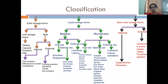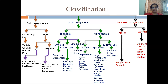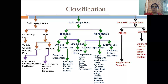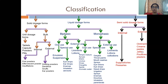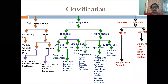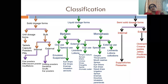Next comes semi-solid dosage form. Semi-solid dosage form is divided into two categories: internal and external. For internal semi-solid use: suppositories and pessaries. For external use: ointments, creams, paste, jellies, poultices, and plasters. So this is our summary — classification of dosage forms.